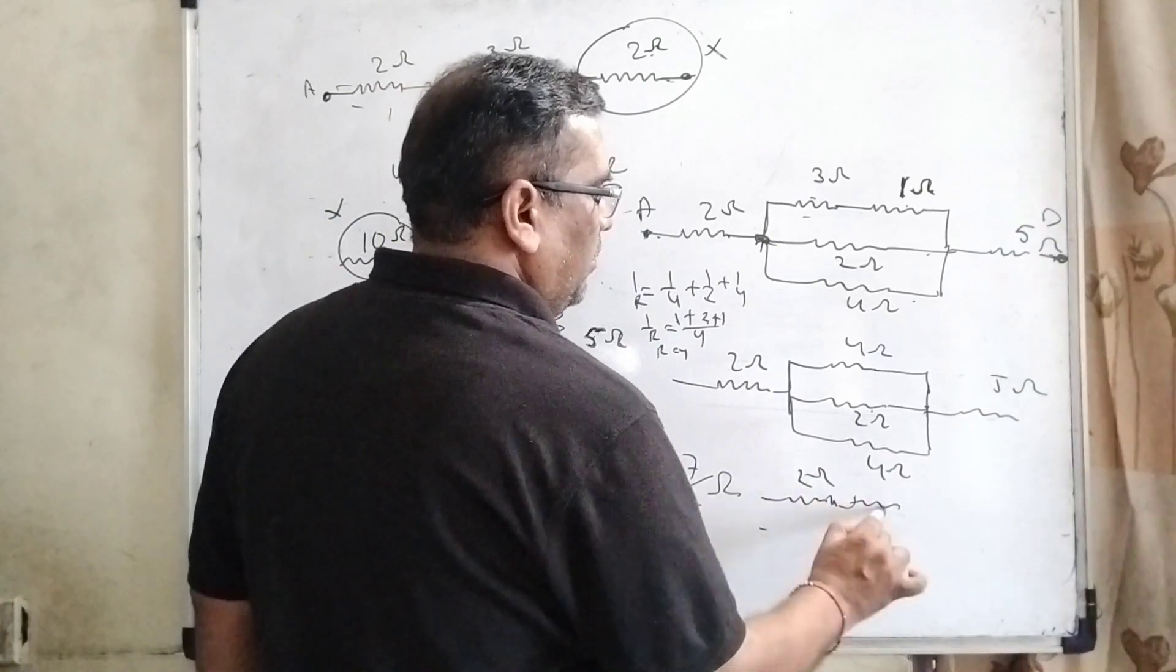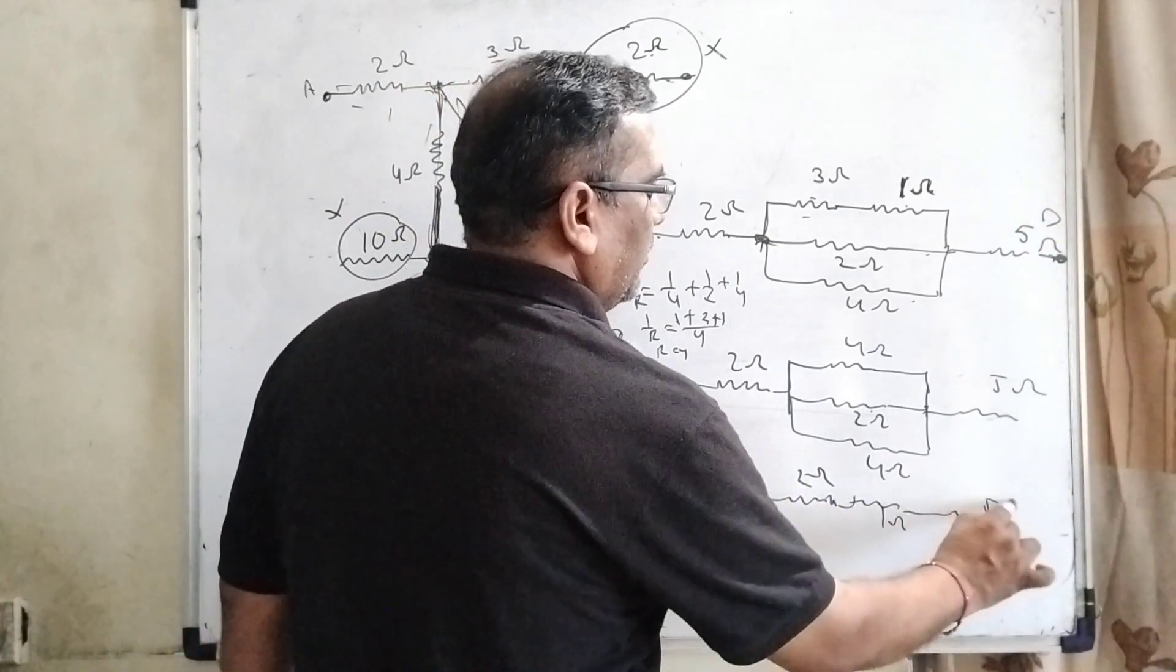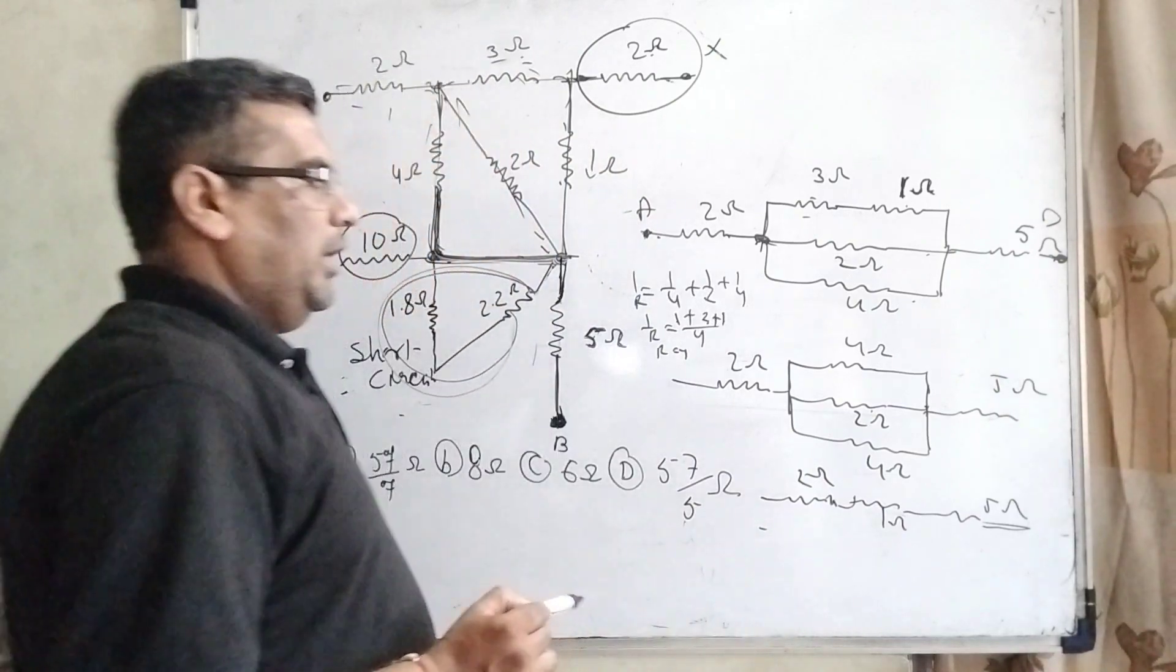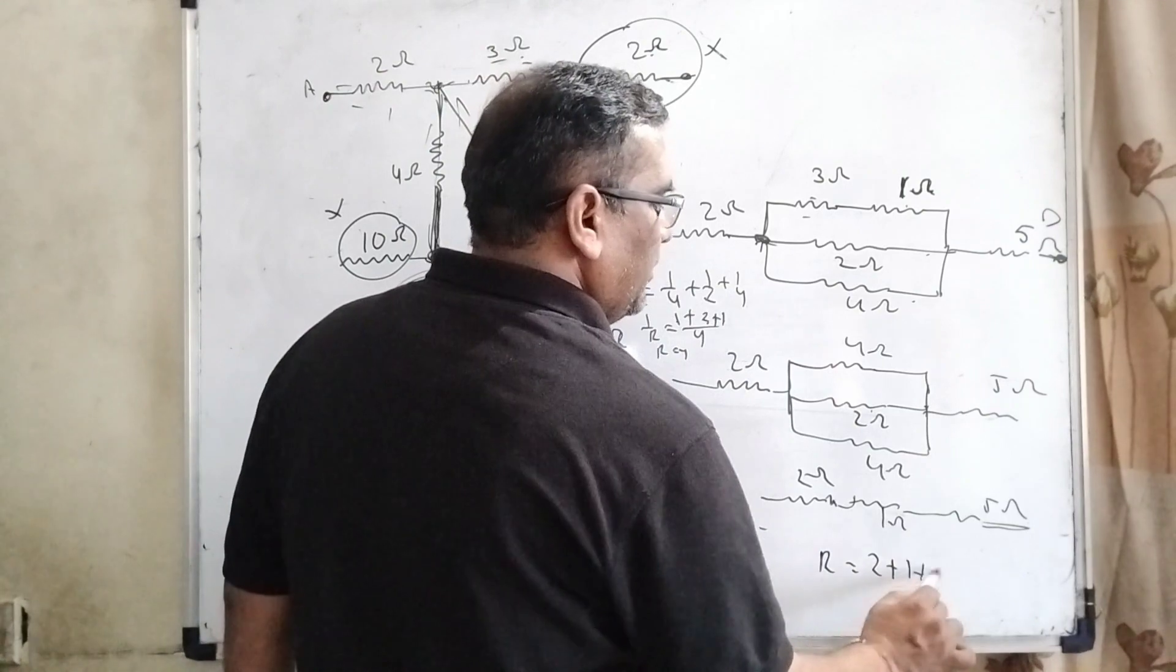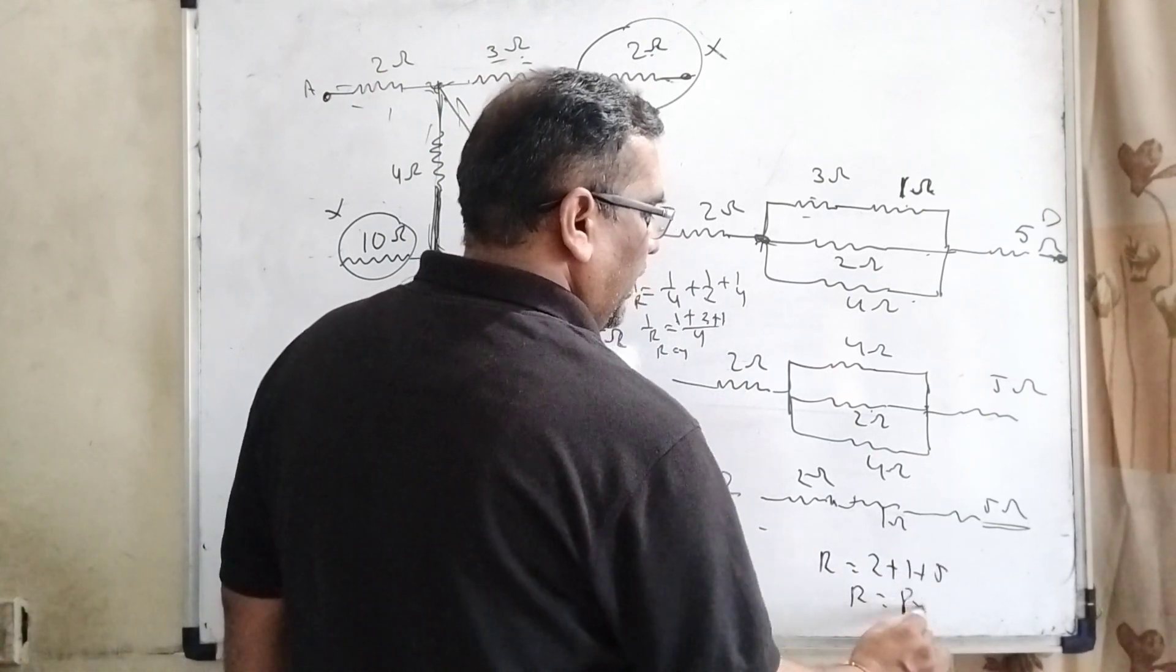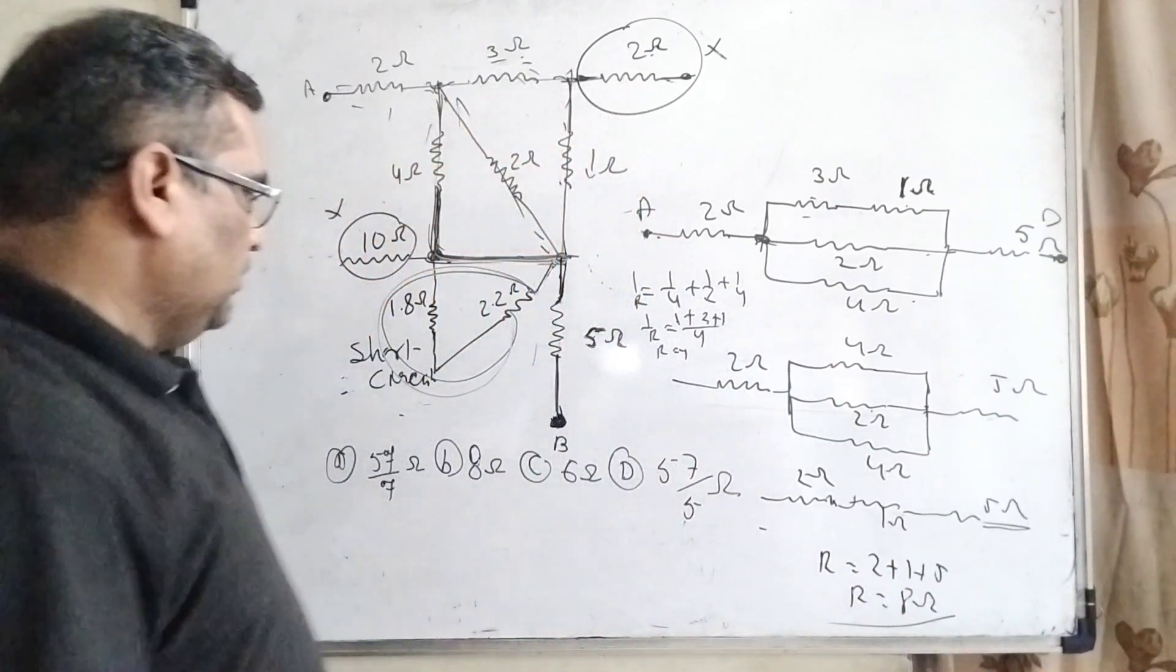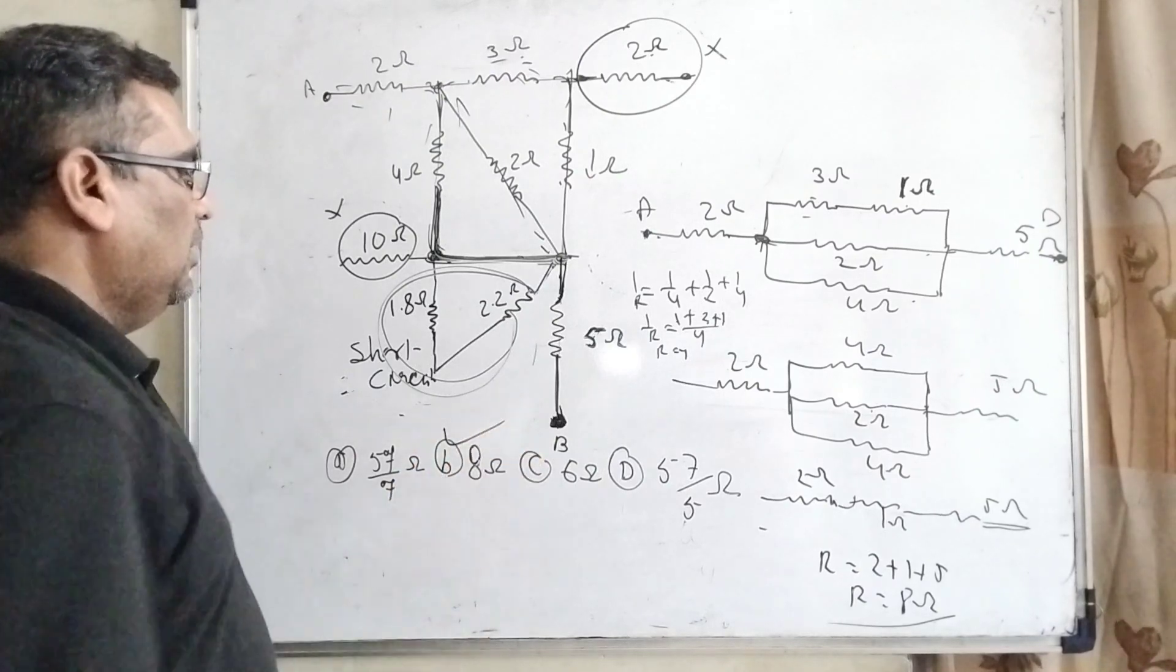Then it is 2 ohm, 1 ohm and 5 ohm. Now again 2 and 2, 1 and 5 are in series. So R equal to 2 plus 1 plus 5, then R equal to 8 ohm resistance. So let's see here, B option is correct.